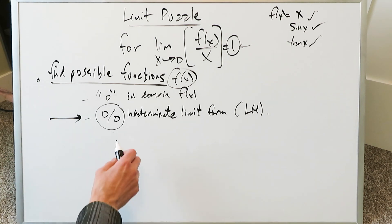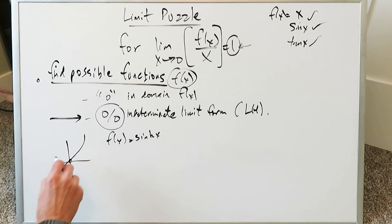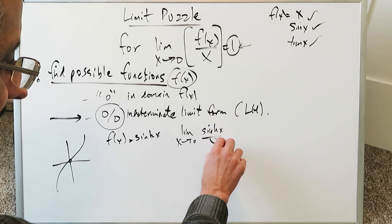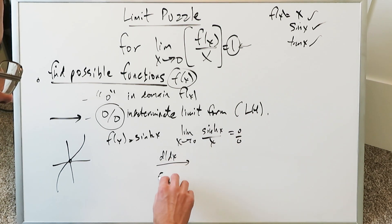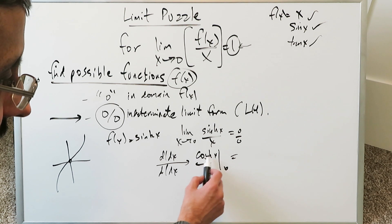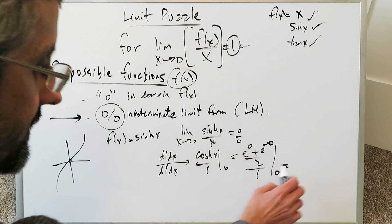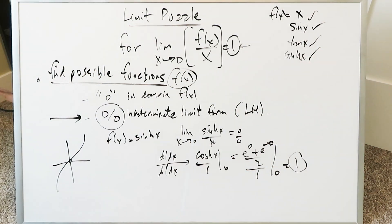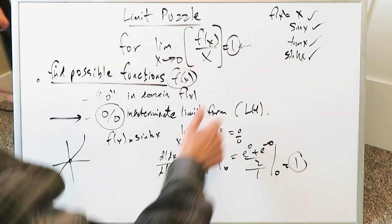There are other options. How about f(x) = sinh x — hyperbolic sine? Its graph passes through the origin. The limit becomes sinh x / x. Plugging in 0: sinh(0) = 0, giving 0/0. Applying L'Hôpital's rule: derivative of sinh x is cosh x, derivative of x is 1. Plugging 0 into cosh x: (e⁰ + e⁰)/2 = 2/2 = 1. So sinh x is another legitimate option that gives the output of 1.